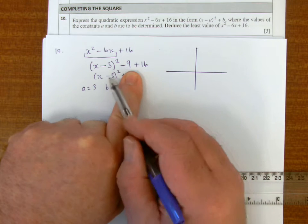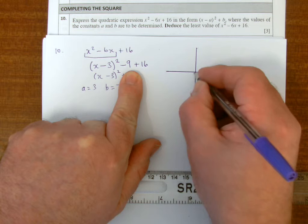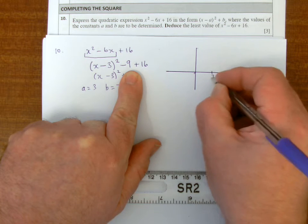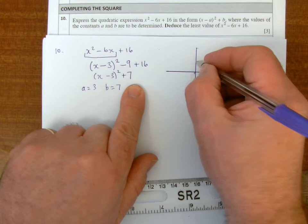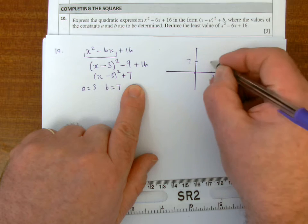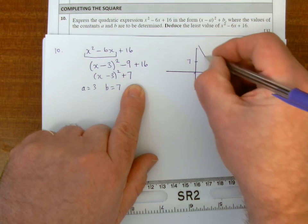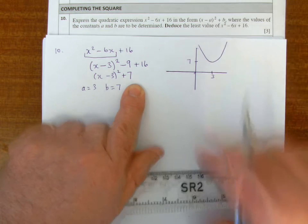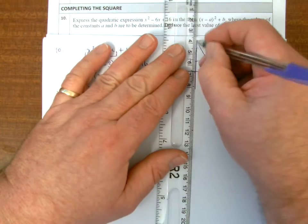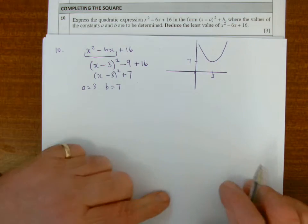So x minus 3, the minus 3 moves it 3 places to the right, and the plus 7 moves it up by 7 values. So the graph will look like that, we'll cut the y axis further up.